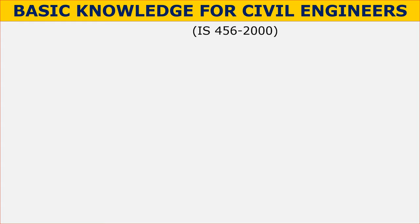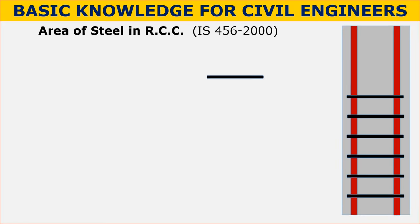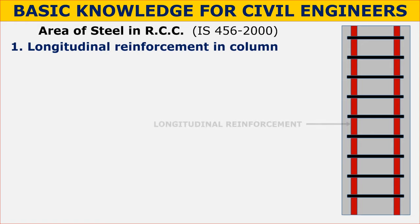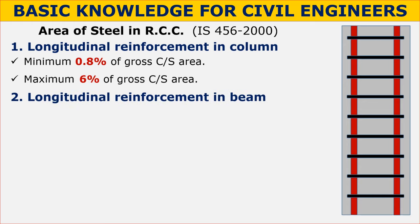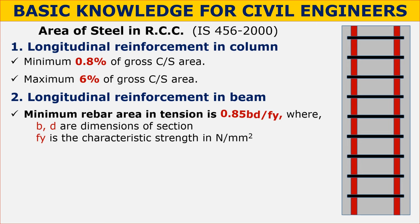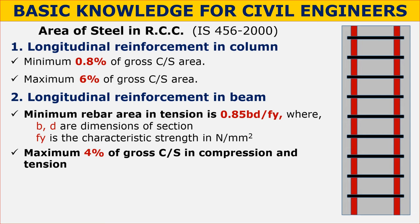With reference to IS 456:2000, the minimum and maximum area of reinforcement in RCC members are as follows. Longitudinal reinforcement in a column should not be less than 0.8 percent and not more than 6 percent of the gross cross-section area, but a maximum of 4 percent is preferred due to 50 percent overlap. For beams, the minimum bar area in tension is 0.85 × b × d / fy, where b and d are the section dimensions and fy is the characteristic strength in N/mm². Maximum rebar is 4 percent of the cross-section area in both compression and tension.